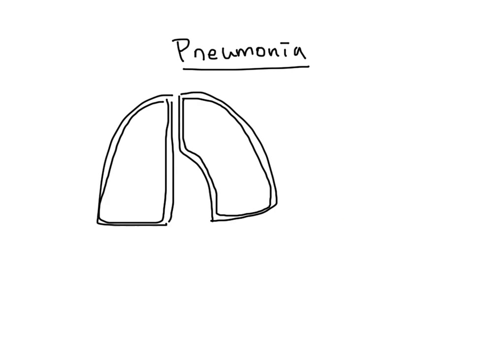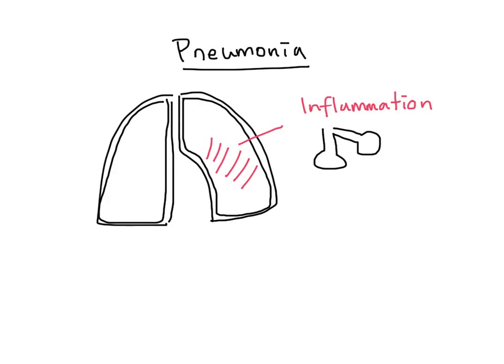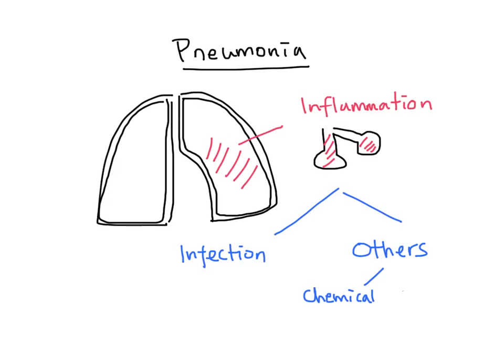Pneumonia is defined as the inflammation of the lung parenchyma. In pneumonia, the alveolar air spaces are filled with exudate and inflammatory cells. It can be caused by infection in most cases. It can also be caused by other reasons such as chemical exposure. In this segment, we'll be most interested in infectious causes of pneumonia.